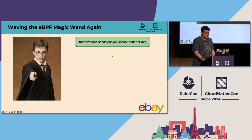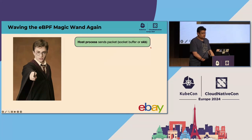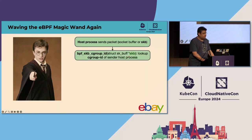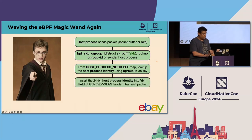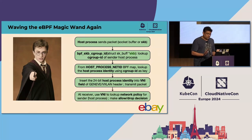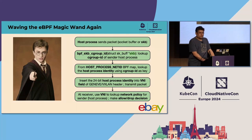We wave that eBPF magic wand once again, only this time in the Cilium network traffic data path. It starts with the host process sending a packet. In the kernel, it shows up as a socket buffer structure, or SKB. We use the BPF helper function bpf_skb_cgroup_id to look up the cgroup ID of the sending host process. We then use that cgroup ID to look up the 24-bit host process identity from the host_process_net_id BPF map, which is pre-configured by the control plane. We insert this 24-bit identity value into the VNI field in the Geneve or VXLAN header and transmit the encapsulated packet. At the receiver, we look up the ingress network policy to determine if the sender is allowed or denied, and make an allow/drop decision on the incoming traffic.